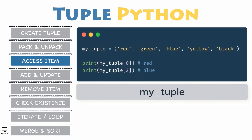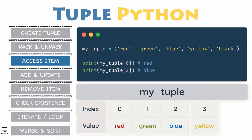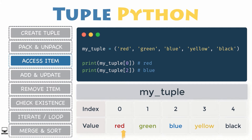Accessing an item. You can access individual items in a tuple using an index in square brackets, or using the unpacking method. Note that tuple indexing in Python starts from 0 and is similar to lists. The indices for the elements in a tuple are illustrated below. If you want to access the first value of my tuple, located at index 0, you specify index 0 in square brackets. Index 1 for green, 2 for blue, and so forth.